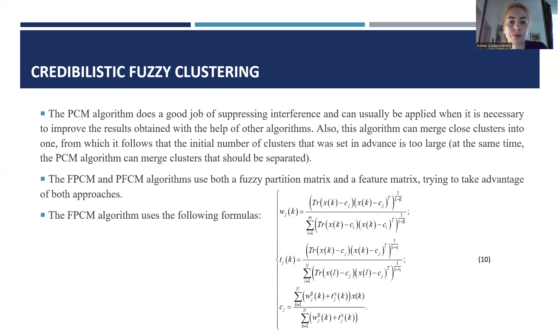The PCAM algorithm does a good job of suppressing interference and can usually be applied when it is necessary to improve the results obtained with the help of other algorithms. Also, this algorithm can merge closed clusters into one, from which it follows that the initial number of clusters that was set in advance is too large.